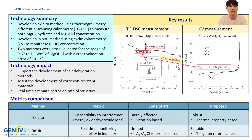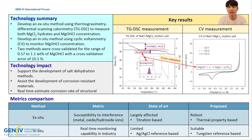The two methods were then cross-validated, and the error was calculated to be about 10%. The moisture analysis method using TGDSC can minimize the influence of other ions in the molten salt, as it is based on the typical thermal properties of magnesium chloride-based compounds. Moreover, the electrochemical analysis method using a tungsten reference electrode can enable real-time monitoring of magnesium hydroxychloride at an industry scale.